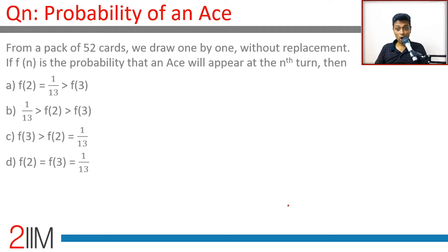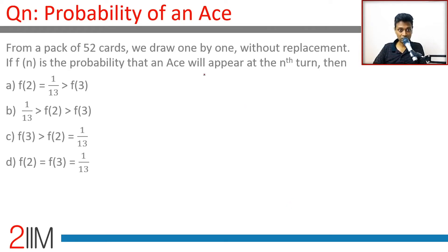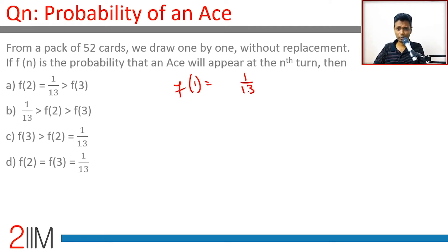From a pack of 52 cards we draw one by one without replacement. f(n) is the probability that an ace will appear for the first time at the nth turn. f(1) is the probability that an ace appears on the first turn, which is 1 by 13.